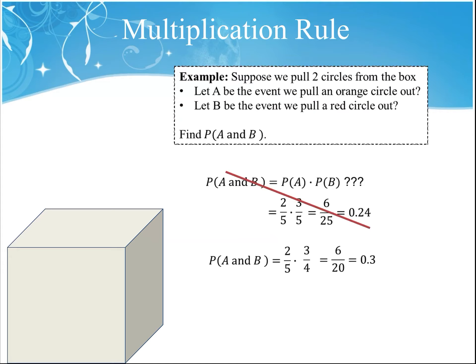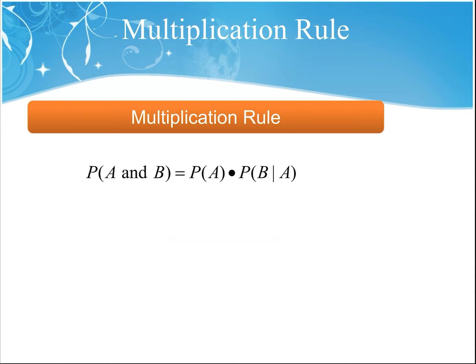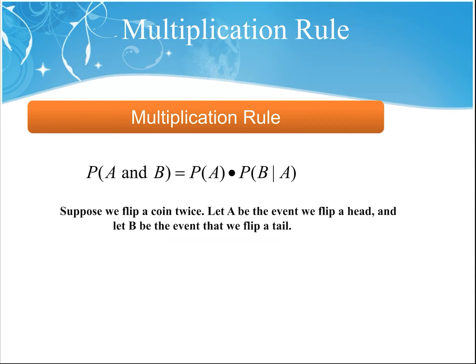Going back to the box example, that's why the probability of event A and B happening is the probability of event A — two-fifths — times the probability that event B happened given that A already happened. So the probability of A and B is the probability of A multiplied by the probability of B given that A already occurred.